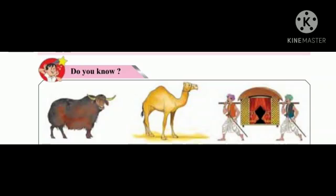Even if ultramodern means of transport have been invented in modern times, in some parts of the world, man and animals are still used for the purpose of transport. For example, yaks are used in inaccessible parts, camels in the desert, and palanquins or doli in the mountain areas.